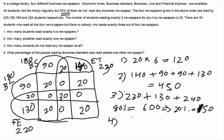Fourth and final. What percentage of people reading Business Standard also read at least one other newspaper? Okay. So Business Standard, only Business Standard is 90. What is left? 20, 20, 30 and 20. So other than, more than one is 90 out of a total of 180 which gives me the answer as 50%.